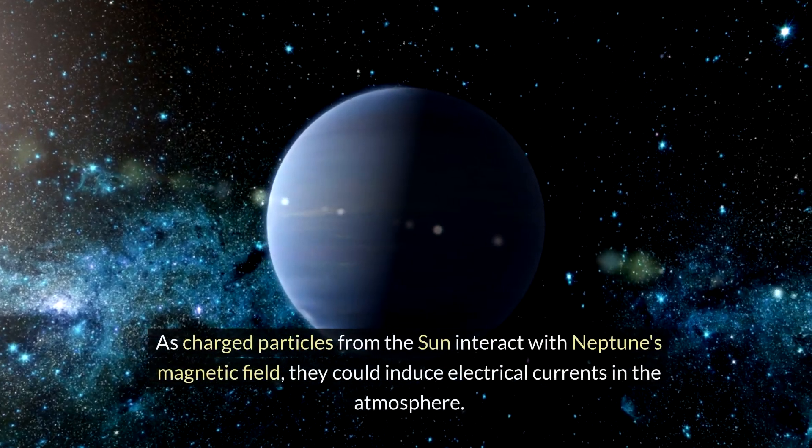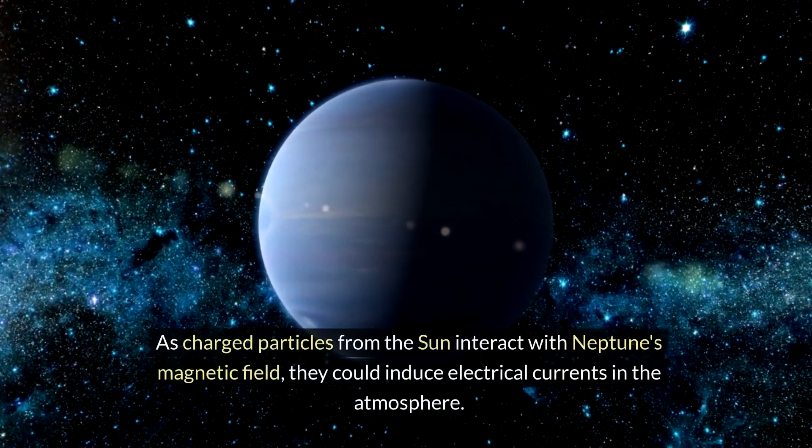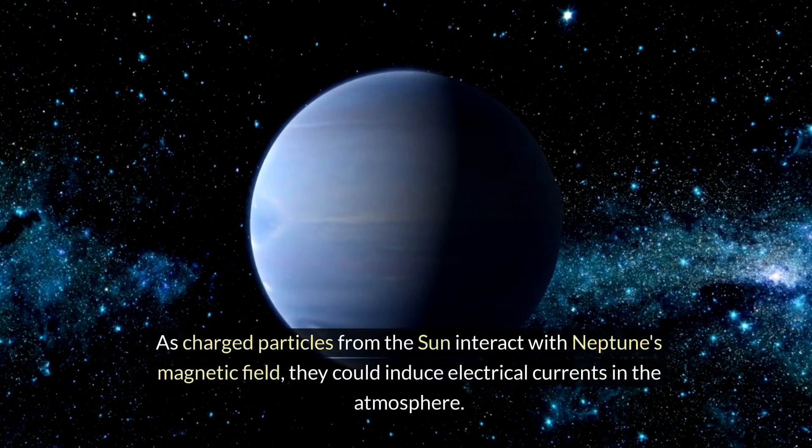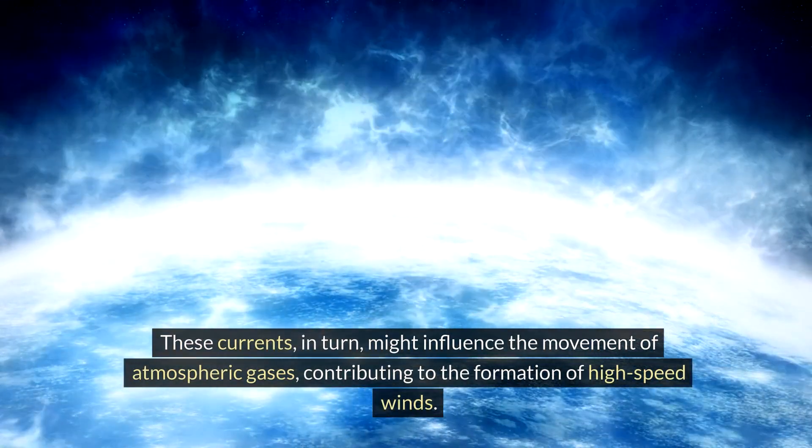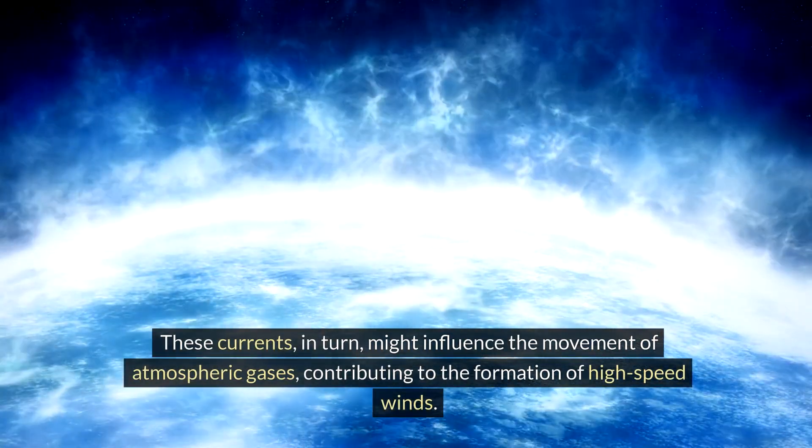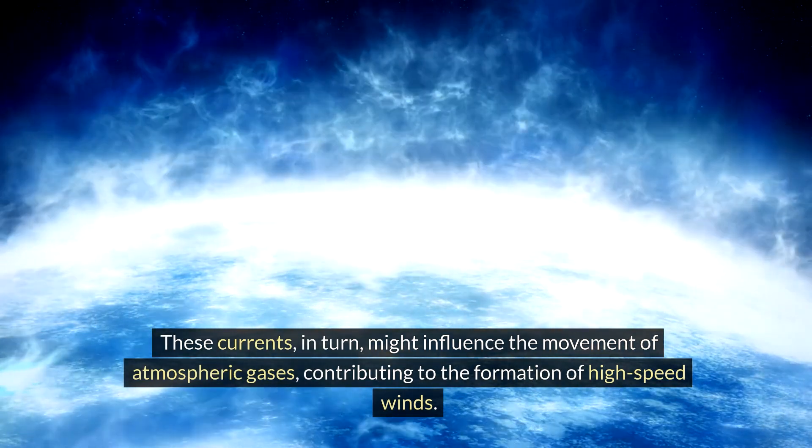As charged particles from the Sun interact with Neptune's magnetic field, they could induce electrical currents in the atmosphere. These currents, in turn, might influence the movement of atmospheric gases, contributing to the formation of high-speed winds.